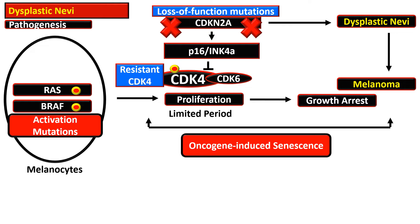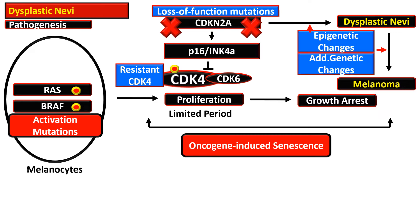The genetic events responsible for the development of dysplastic nevi are CDK4-resistant variants and RAS/BRAF serine-threonine signaling mutations. However, not all dysplastic nevi show these genetic changes, so it is considered that epigenetic changes and additional changes are necessary for the progression to dysplastic nevi and from dysplastic nevi to melanoma.